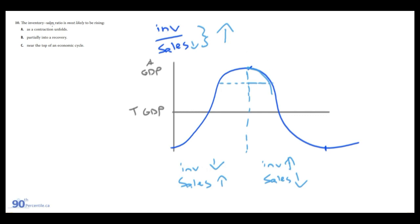So where is this ratio going to be the highest? It's going to be highest at the peak, where sales drop the sharpest. If sales drop, this entire ratio is going to be at its highest point, assuming we're ordering the same amount of inventory all the time. So the inventory-to-sales ratio is most likely rising near the top of an economic cycle. Partially into a recovery, sales are starting to increase, so the ratio would most likely be decreasing. And in a contraction, the sharpest drop is right at the peak, which is why the answer is near the top.